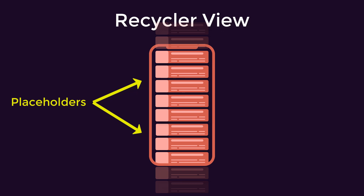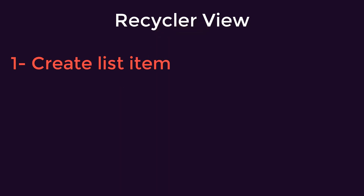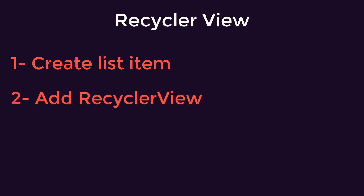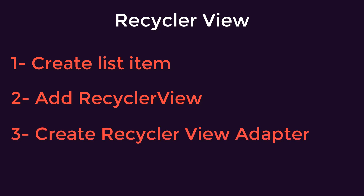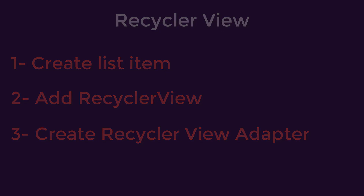The steps to include RecyclerView within our app are: first, create the list item layout — a single item that will determine how the rest of the list looks. Then, include the RecyclerView widget within our main activity. Finally, create the adapter to link everything together within our main activity. So let's do that.